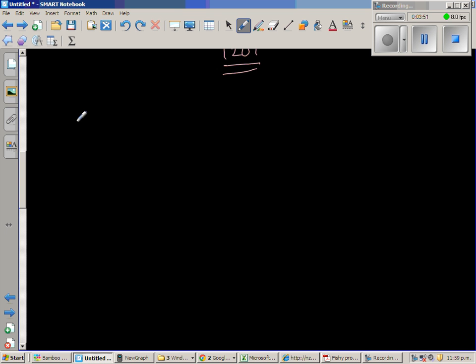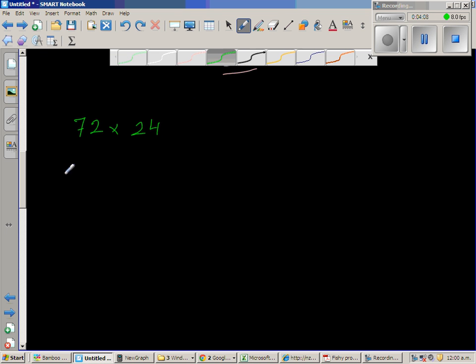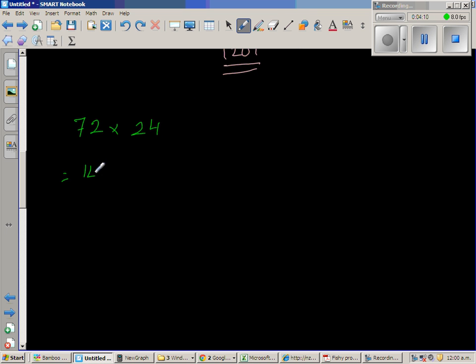The next question is 72 times 24. So the same process. I'm going to double this and half this. So 72, I'm going to double this. If you double 72, it is 144 times 12.